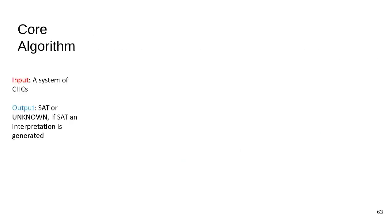Now we get to the core algorithm. As input we get a system of CHCs, and as output either satisfiable or unknown. If satisfiable, we also give the user the interpretation we came up with. The first thing we do is order all predicates in the CHC by dependency — for example, reverse depends on append, so we process append first. We also create a new formula called lemmas, initialized to true.